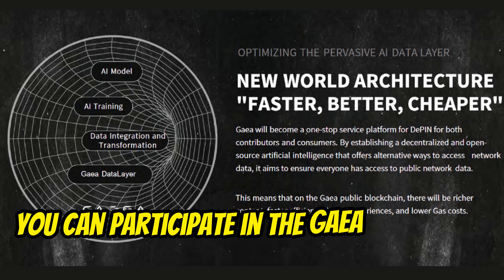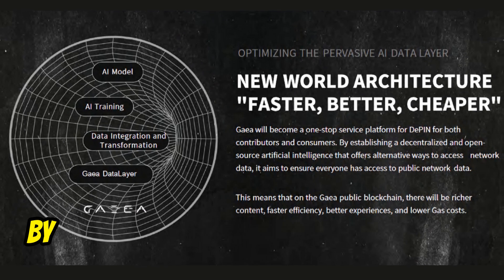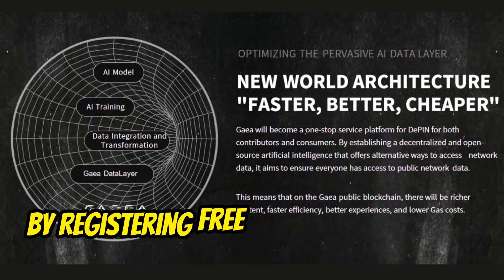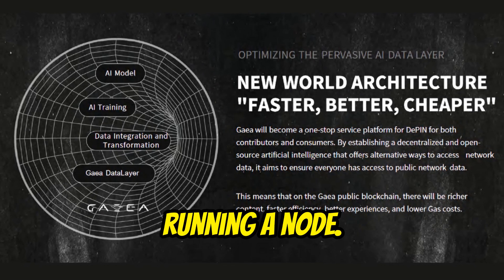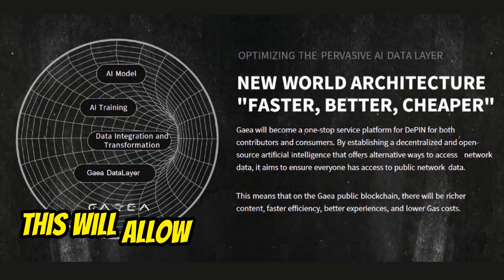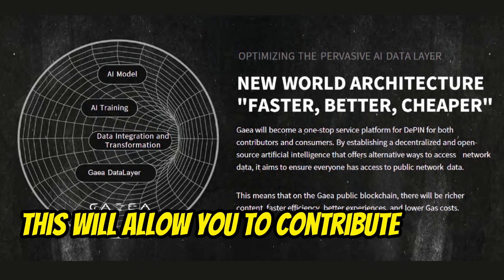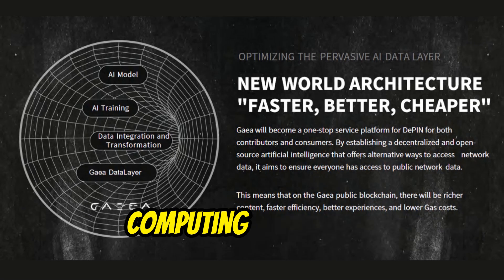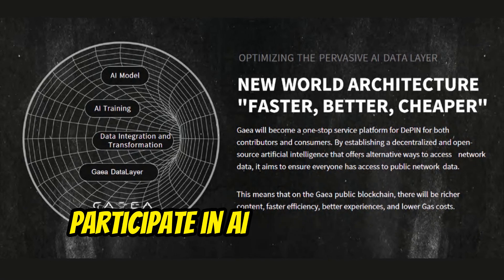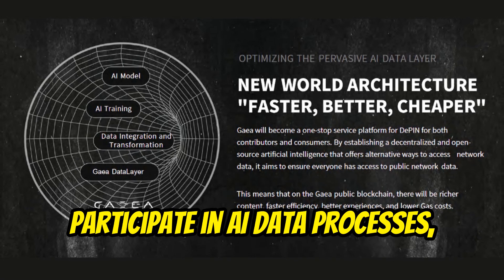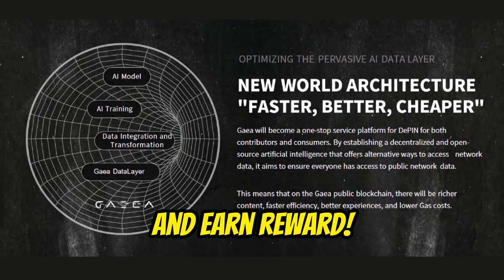You can participate in the GIA ecosystem by registering free on its platform and running a node. This will allow you to contribute unused computing resources, participate in AI data processes, and earn rewards.